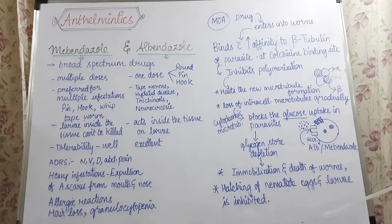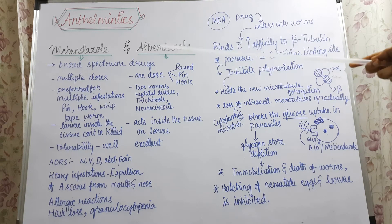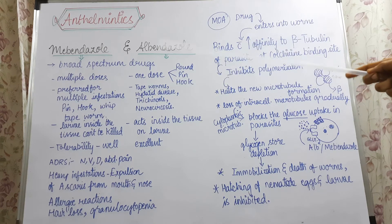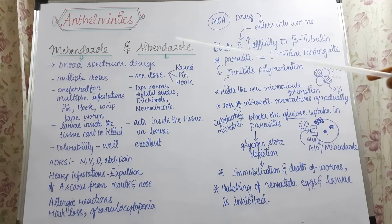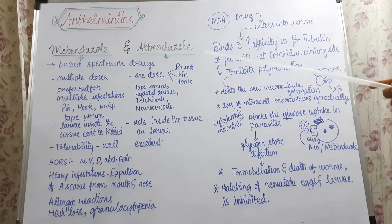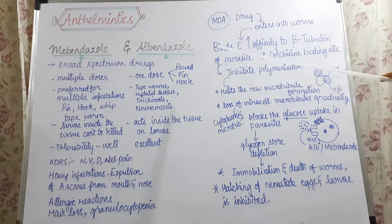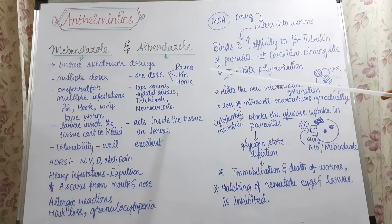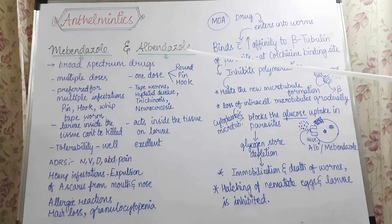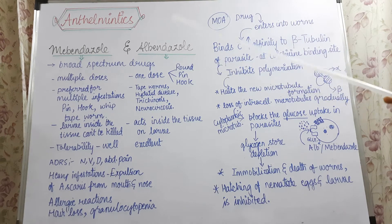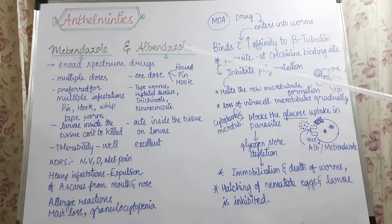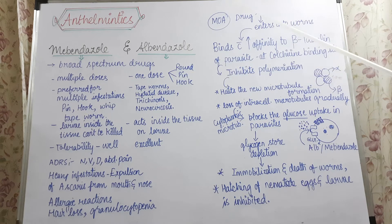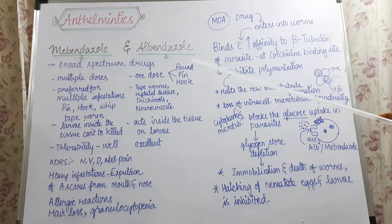Both of them have the same mechanism of action. Coming to the differences: mebendazole must be used in multiple doses — that is the disadvantage associated with mebendazole. Whereas, albendazole can be used in a single dose, which is more than enough to treat many infestations. In case of mebendazole, multiple doses like 100 mg twice a day for 3 consecutive days is used in many cases. Mebendazole is preferred only when multiple infestations are occurring.